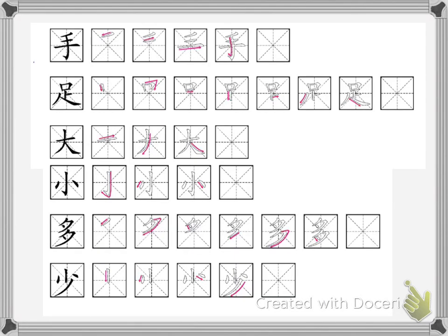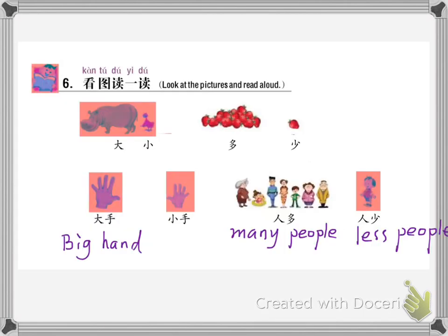Okay, let's review! 少, 足, 大, 小, 多, 少. When you write, please follow the stroke order. Let's read! 大, 小, 多, 少.